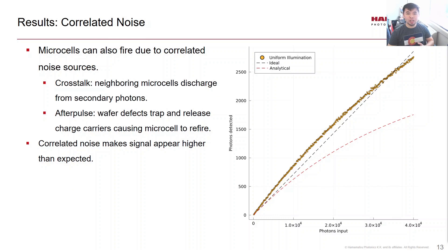And finally, microcells can fire due to correlated noise like crosstalk and after pulse, which makes the nonlinearity worse. And this is also an effect that was not previously captured by the equation.